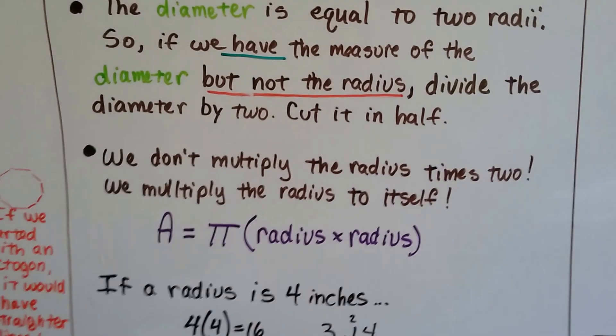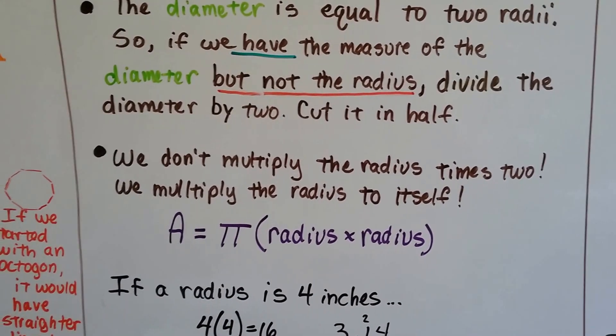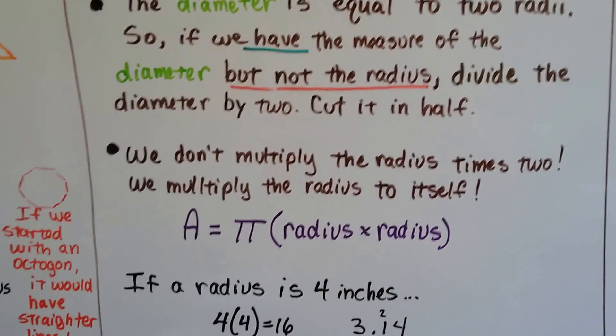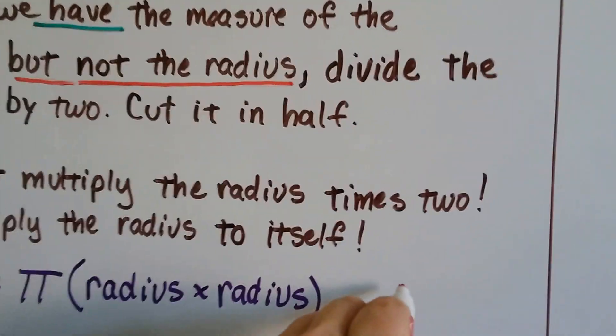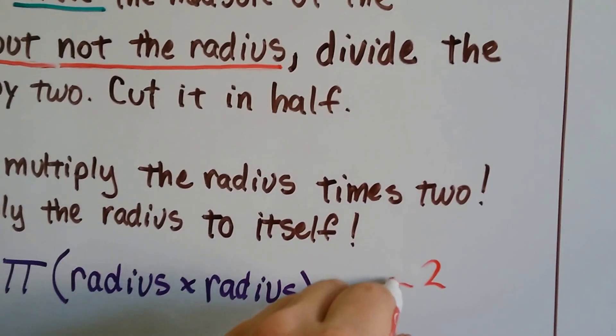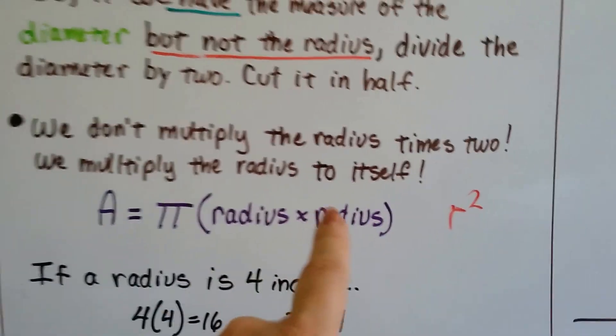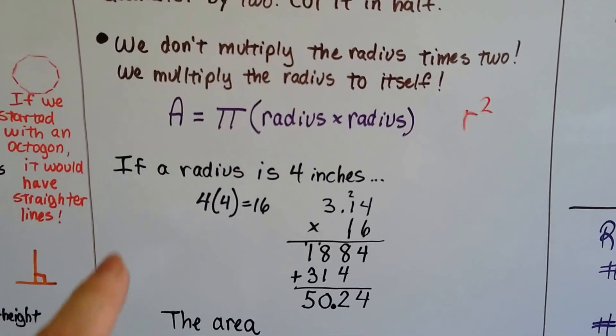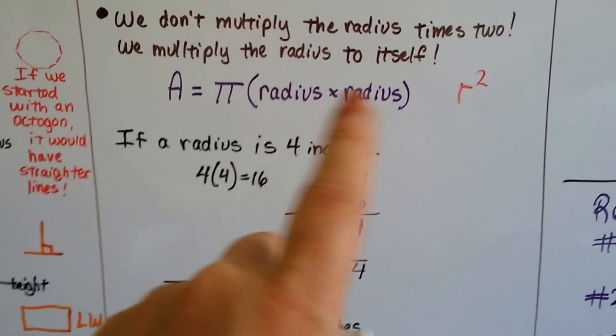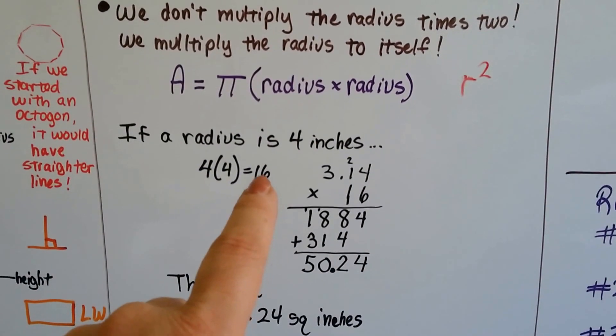And we don't multiply the radius times 2, we multiply the radius to itself, radius times radius. So if we see r squared, that doesn't mean to multiply the radius times 2, it means the radius times the radius. So if a radius is 4 inches, we would do 4 times 4, radius times radius. That's 16.